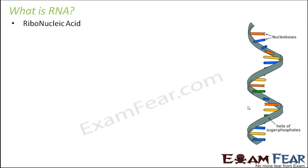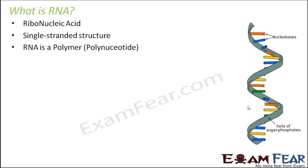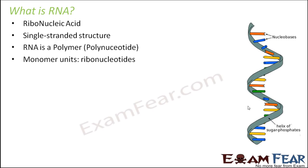RNA is ribonucleic acid and it is a single-stranded structure. Unlike DNA, you do not have both strands — just one of them. However, RNA is also a polymer, a polynucleotide formed by several monomer units, and the monomer units in this case are ribonucleotides. We will talk about the structure in more detail a little later, including what nucleobases and sugar-phosphate mean.